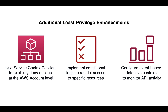To further enhance least privilege in this scenario, I would recommend using service control policies to explicitly deny actions at the AWS account level. Furthermore, implementing conditional logic to restrict access to specific resources is a great next step, so that only certain commands can be run on certain certificate authorities. Lastly, it's important to configure event-based controls to detect and monitor API activity.